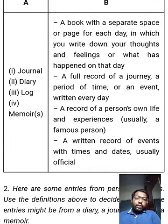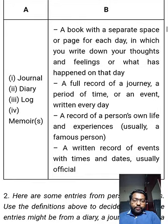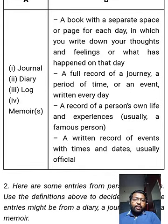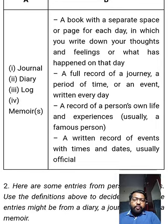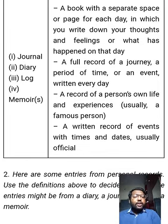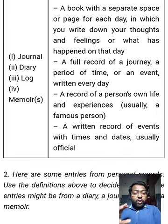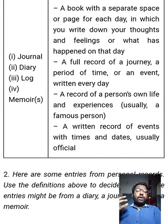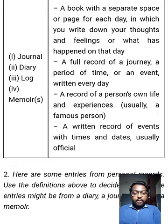A journal is related to something of our own experience, whatever we have done in a particular time. A diary is a book with a separate space for each day. A journal is a full record of a journey, period, or time, written every day. A log is an official record. Memoirs is a record of a person's life and experience, especially of a famous person — the word comes from 'memory.' For example, somebody wrote a memoir on Gandhiji, about his life and experience.